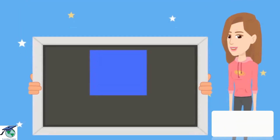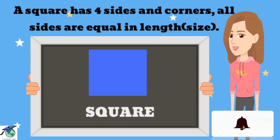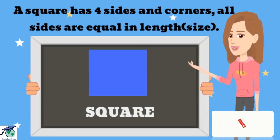This is a square. A square has 4 sides and corners, and all sides of a square are equal in length.